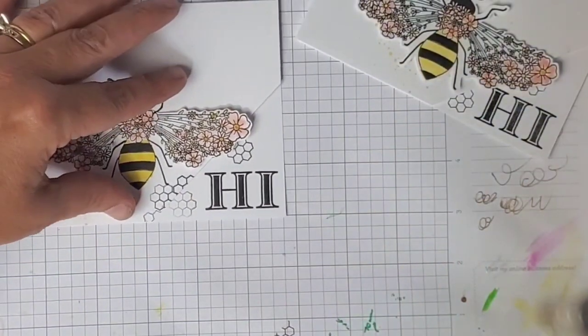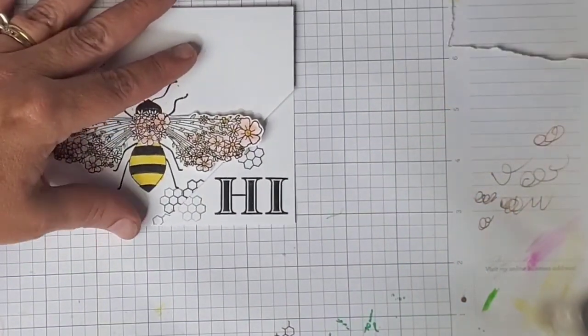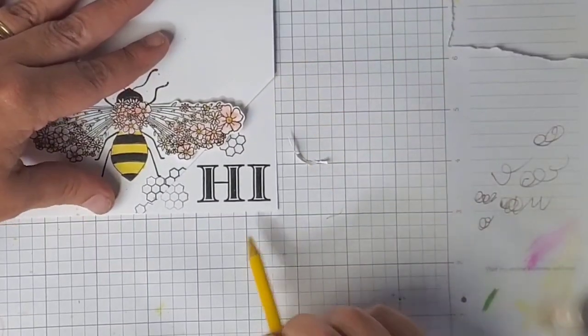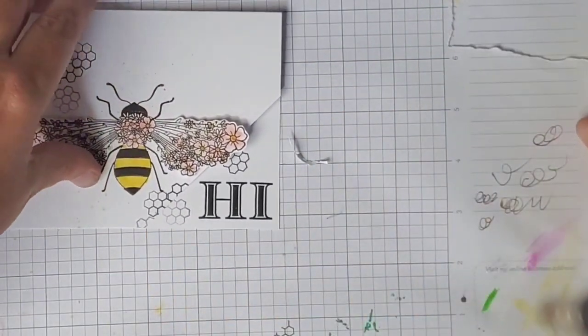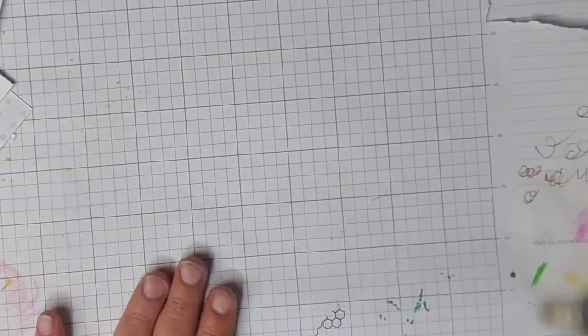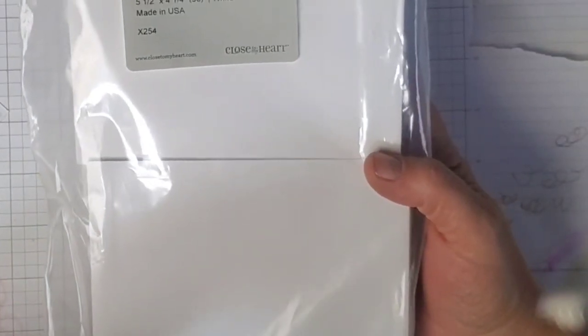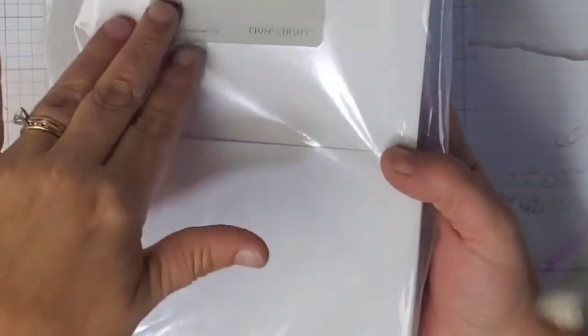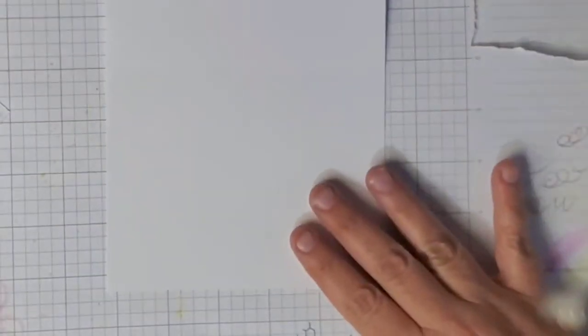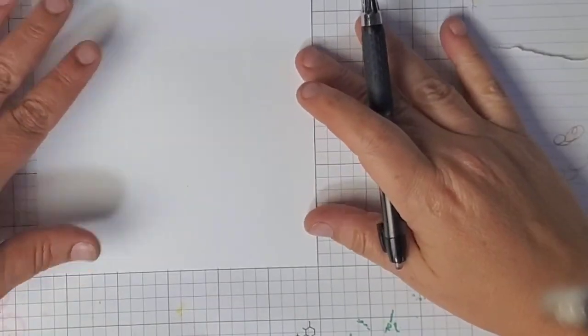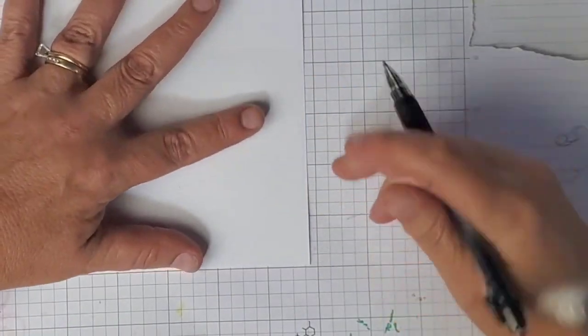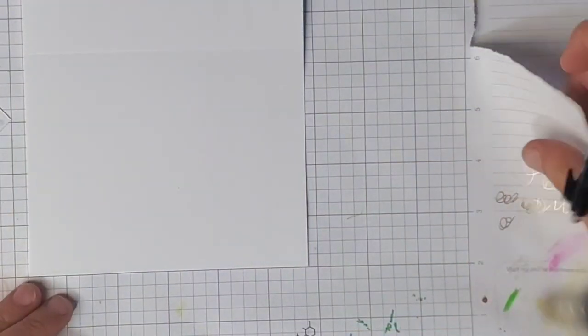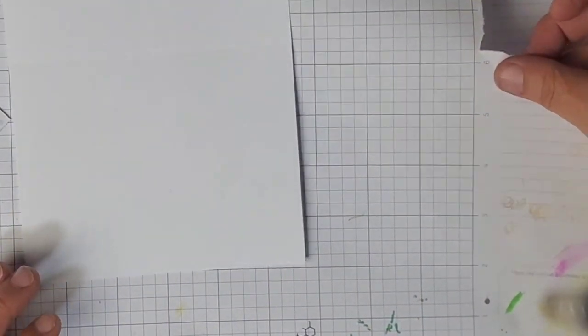What we're going to start by doing is on our blank card base, we're going to measure up two and a half and mark it, and measure across two and a half and then mark it. I'm going to be using the stock from Close To My Heart, the value packets, five and a half by four and a quarter card bases.